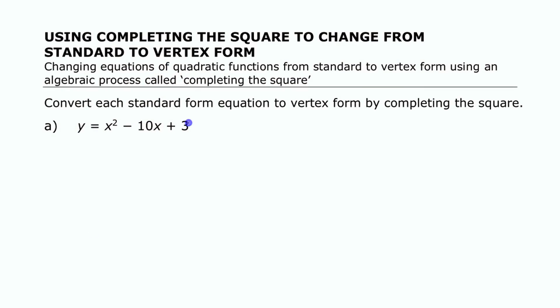Now to turn a standard form equation like that into vertex form, we're going to use this process of completing the square. That's where we work with the x² and the x term and make that into a binomial square by making it into a perfect square trinomial along the way.